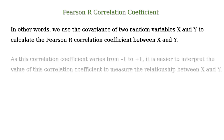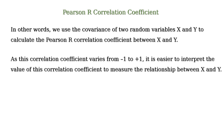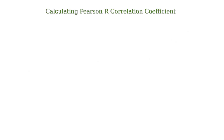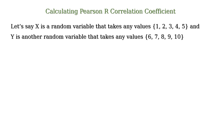As this correlation coefficient varies from minus 1 to plus 1, it is easier to interpret its value to measure the relationship between x and y. Now, let's look at an example.